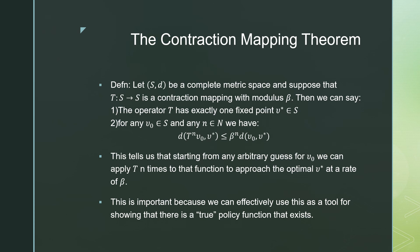This tells us that starting from any arbitrary guess for v0, if we apply T n times to that function, we can approach our optimal value at a rate of beta. This is important because we can effectively use this as a tool for showing that there exists a true policy function.